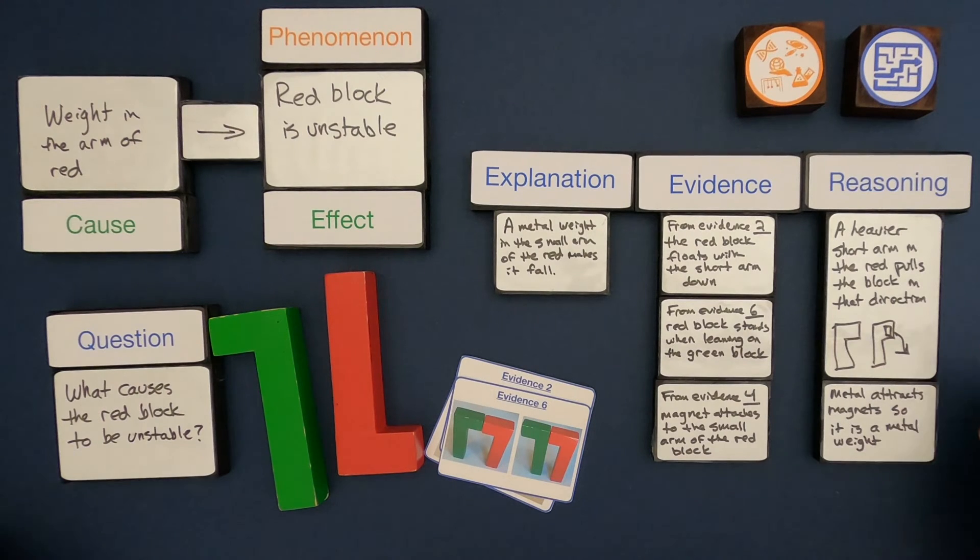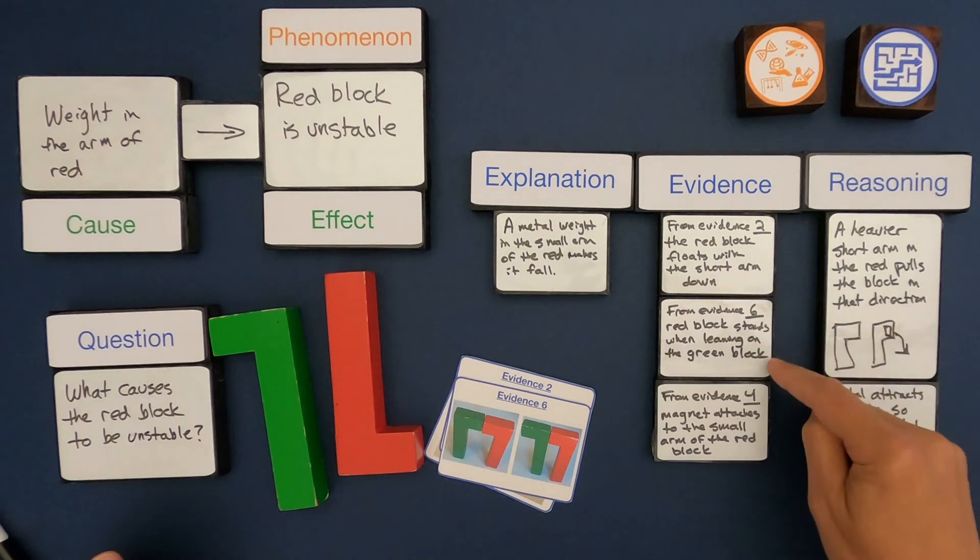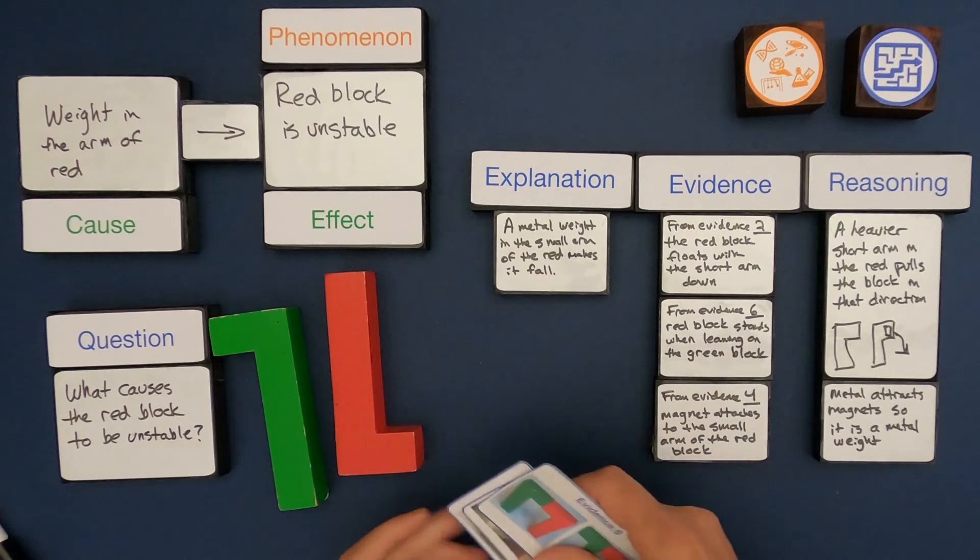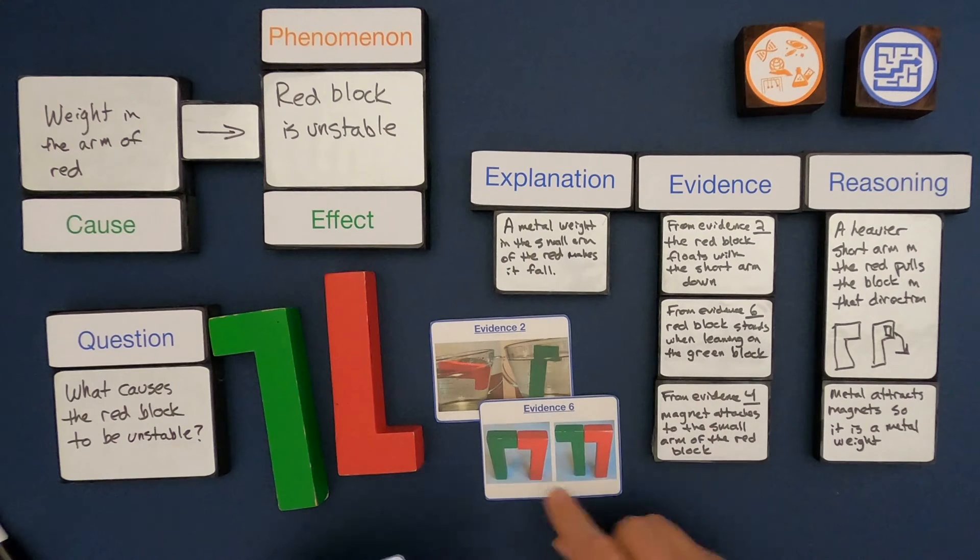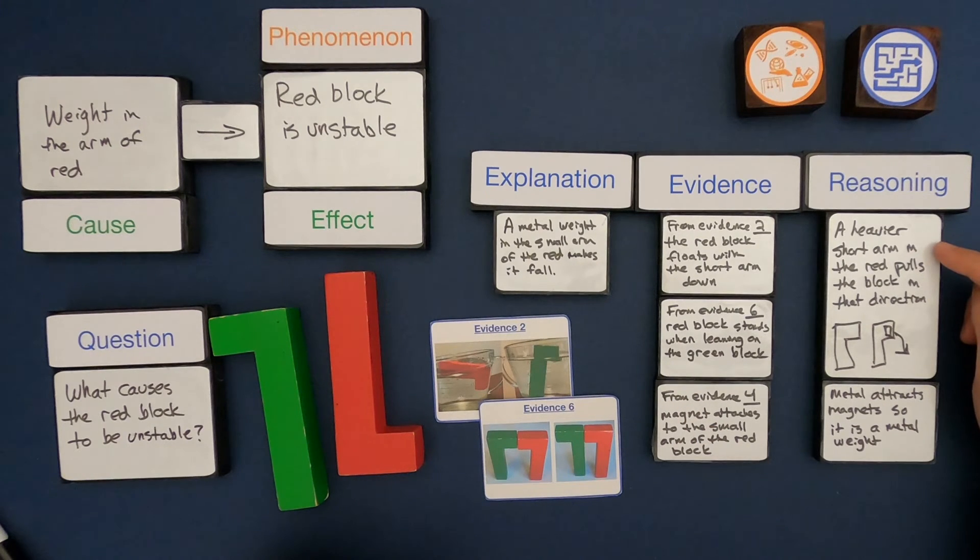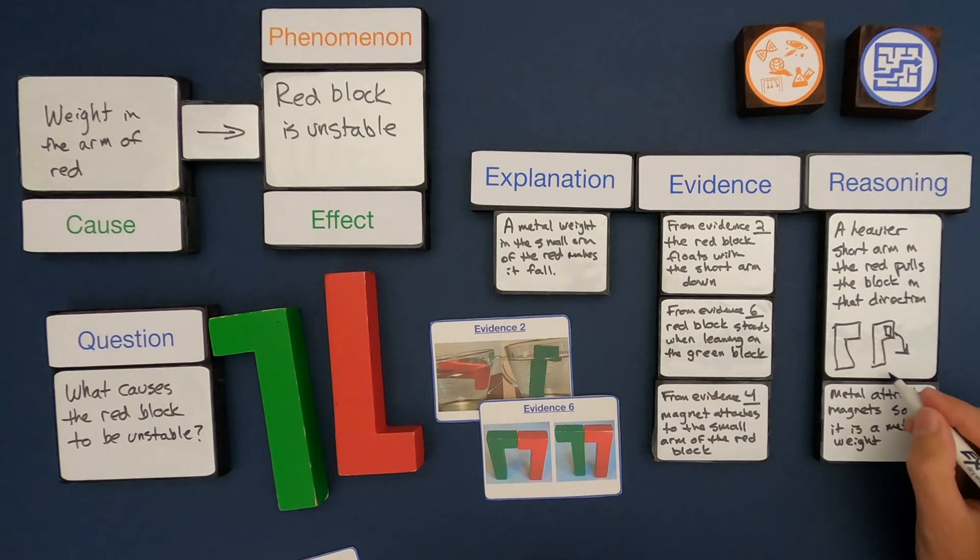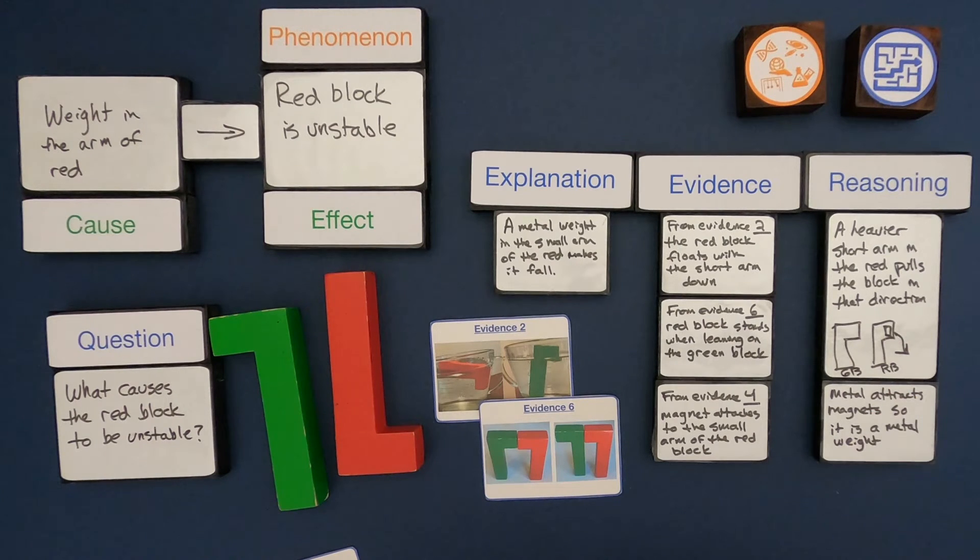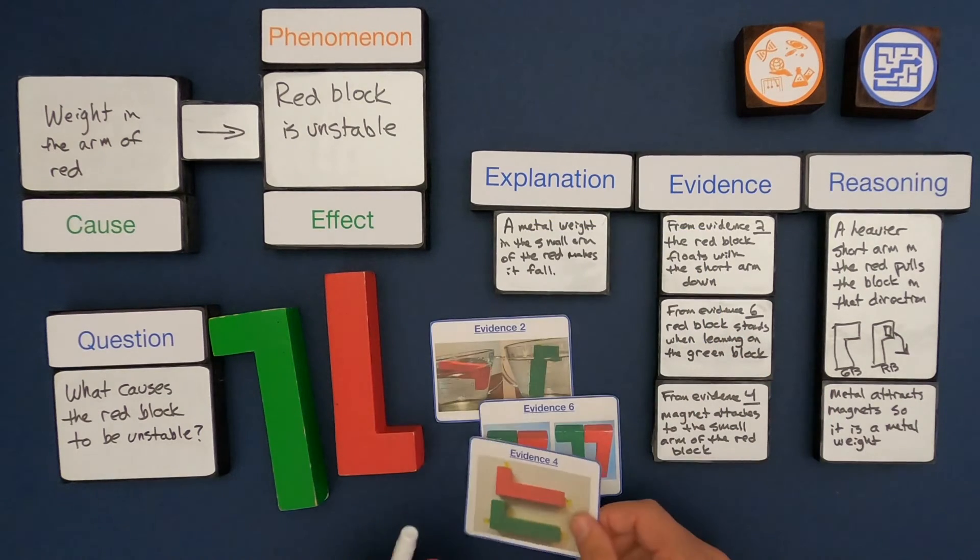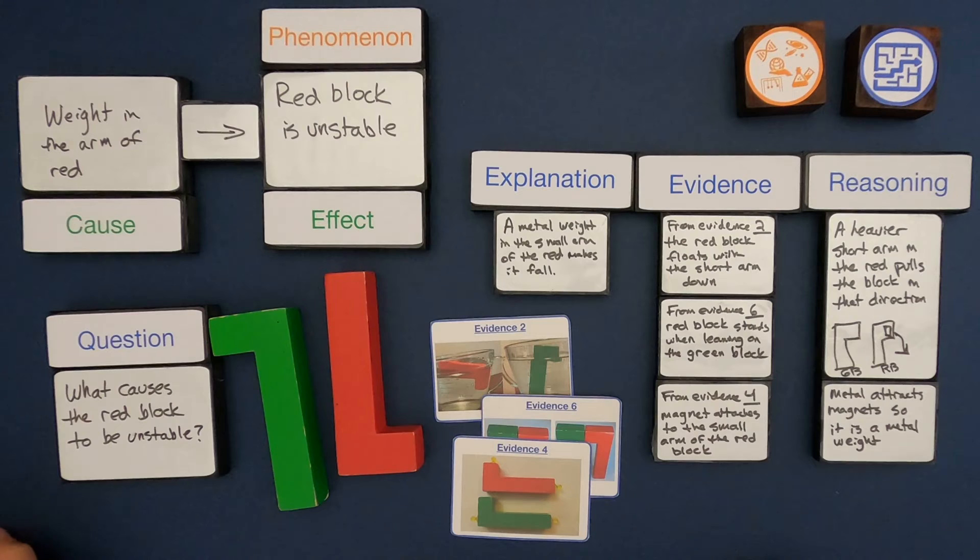To show you my reasoning, I think these first two pieces of evidence, both that it floats with that short arm down and then the fact that it can lean on it, those are both good evidence that there's a heavier short arm in the red block as compared to the green block. And I think this one right here tells me that it's metal. I think it's metal because metal attracts magnets. And so if the magnets are able to stick on the short arm, then I'm thinking it's metal. And so this is my explanation, based on evidence.